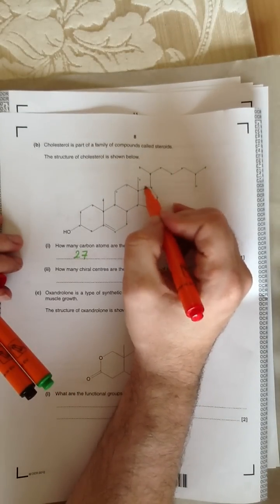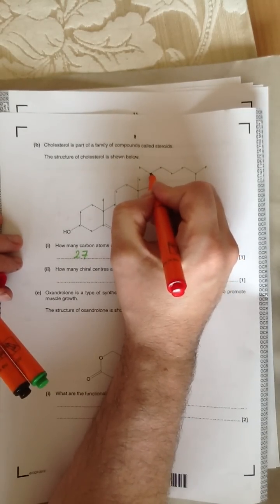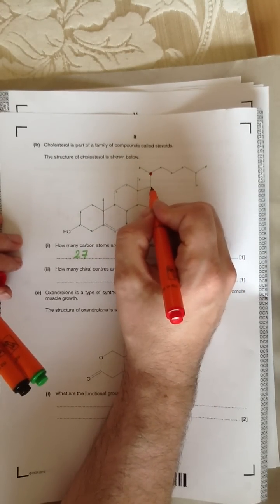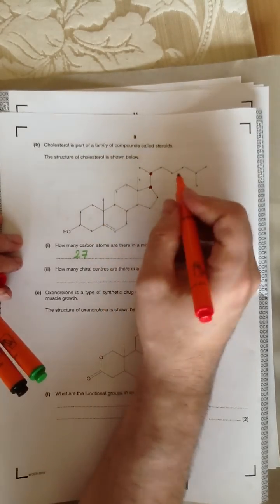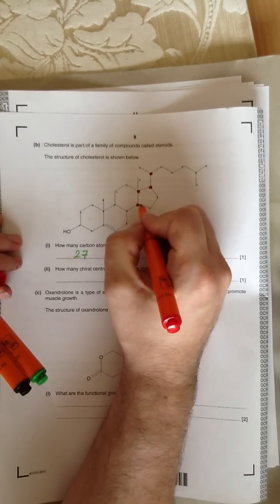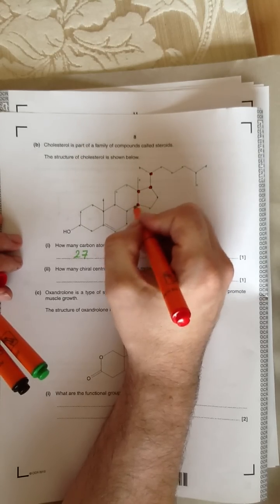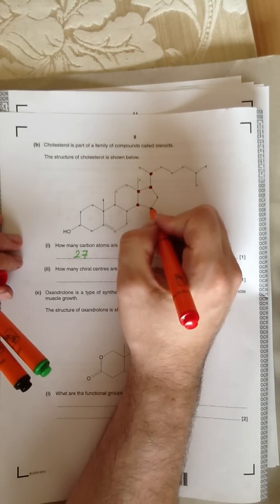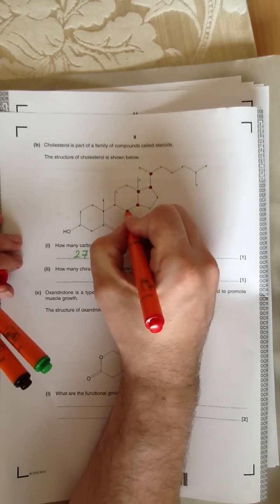This carbon here, what's that got coming off it? Well it has a long chain, it has a methyl group and it's attached to something and a hydrogen. So there are 1, 2, 3 and a missing hydrogen we don't show. Those are 4 different things. What about this carbon? Well this carbon's got a thing coming off it. It's got a hydrogen. It's going towards that part of the ring and it's going into the main bit of the ring. So there's 4 different substituents on that carbon atom there. Same as the next one round. Same as that one.